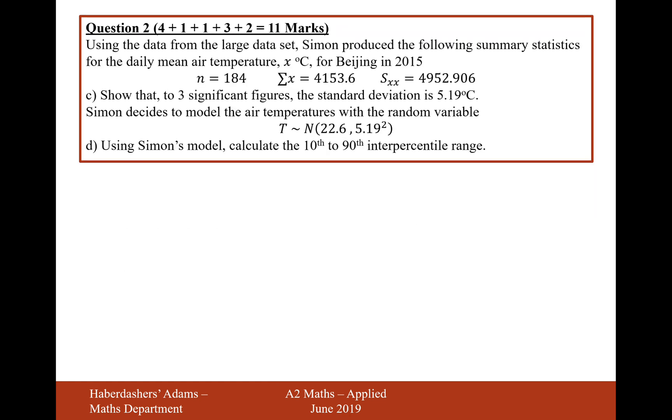Okay, so moving on to part C and D. Using the data from the large data set, Simon produced the following summary statistics for daily mean air temperature X degrees Celsius for Beijing in 2015. N equals 184, the sum of X equals 4153.6, and SXX equals 4952.906. Show that to three significant figures, the standard deviation is 5.19.